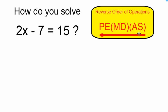Here I want to undo my addition and subtraction first. So I'm going to undo the subtraction of 7. The inverse of subtracting 7 is adding 7, so that's what I'm going to do to both sides.